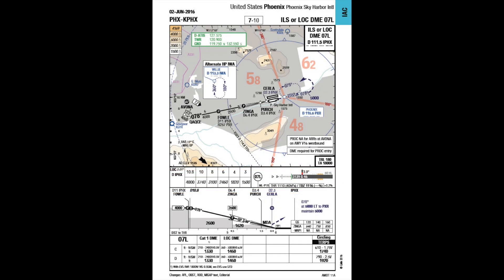Some charting vendors apply a briefing content box containing approach briefing relevant information. LIDO instrument approach charts don't need a briefing box section strip, as all approach briefing relevant data are part of the LIDO instrument approach chart. Let's have a closer look at approach briefing relevant instrument approach chart data found on LIDO charts. The information found in a briefing box can be easily obtained following these steps, beginning from the upper section of a LIDO instrument approach chart and retrieving downwards.